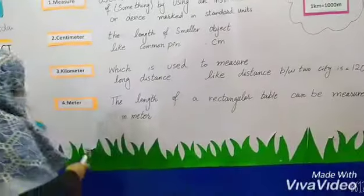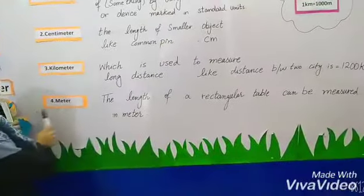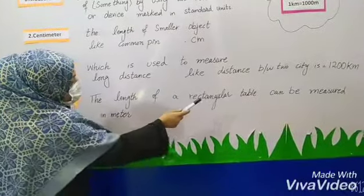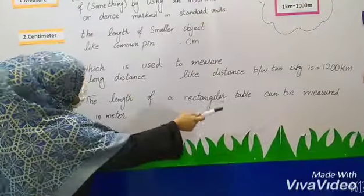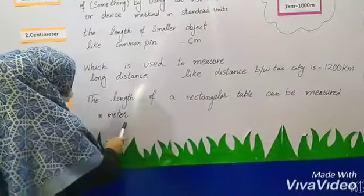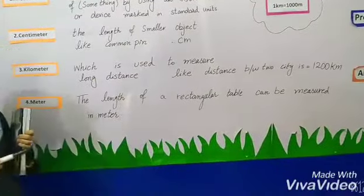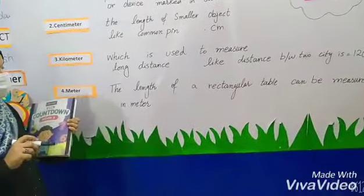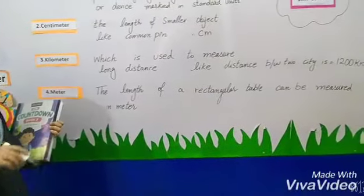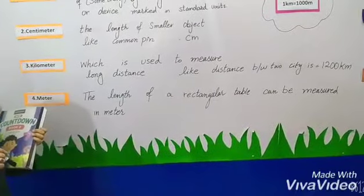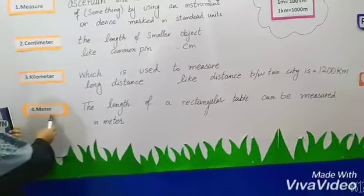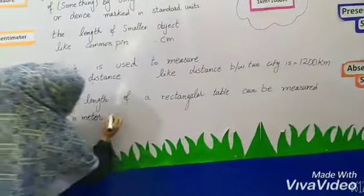Next we have meter. The length of a rectangular table can be measured in meters. We use meters for such medium-length objects, and the short form is m.